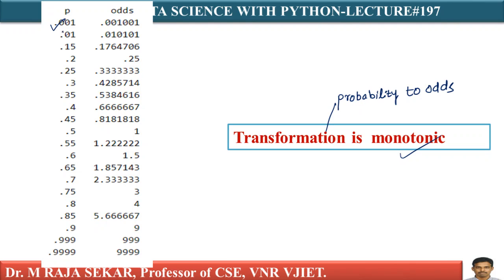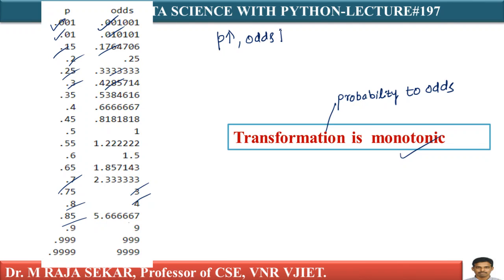For example, when probability is 0.01, the corresponding odds value is 0.001. As P is increasing, odds is also increasing. That's a monotonic relation — as P increases, your odds also increases, and as odds increases, P also increases.